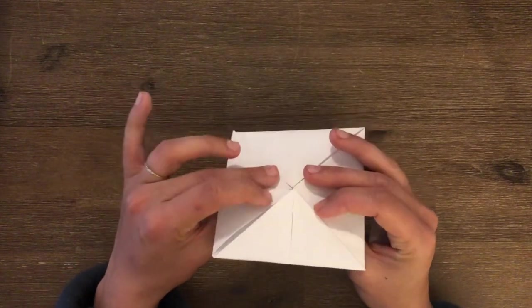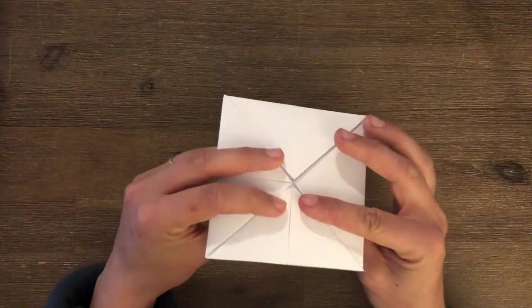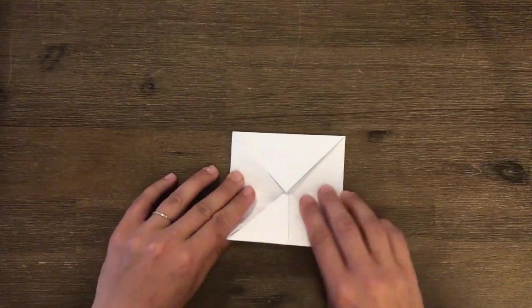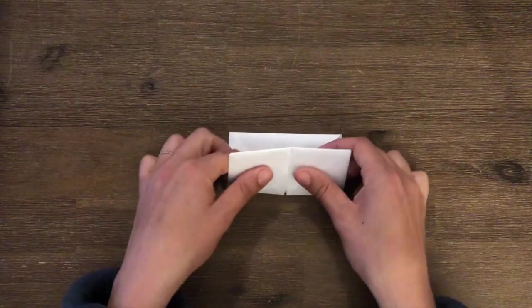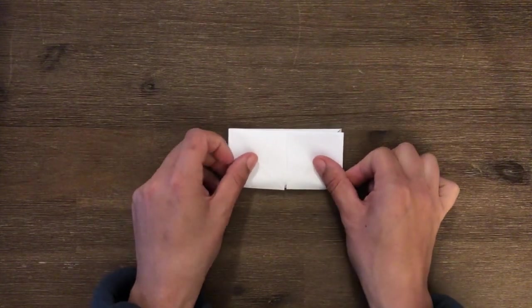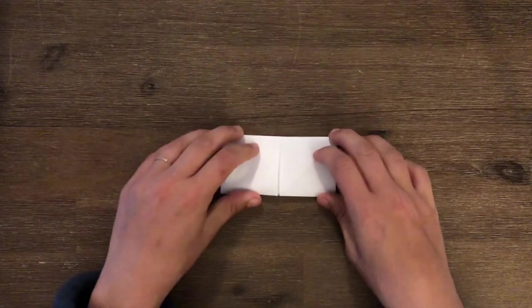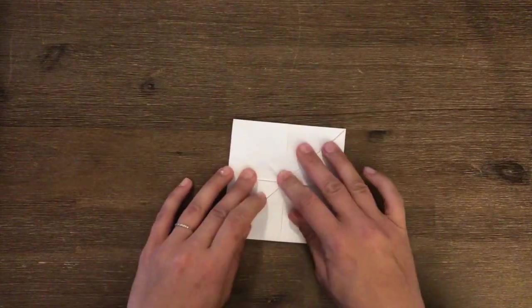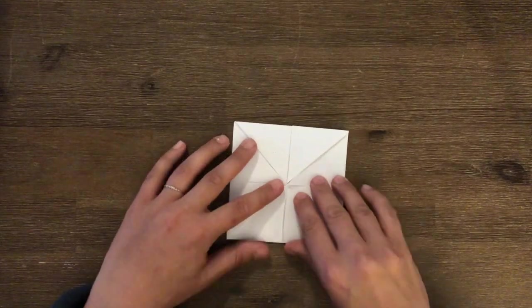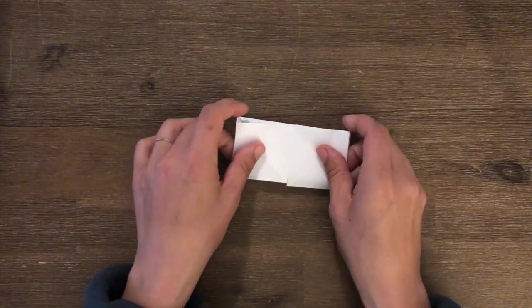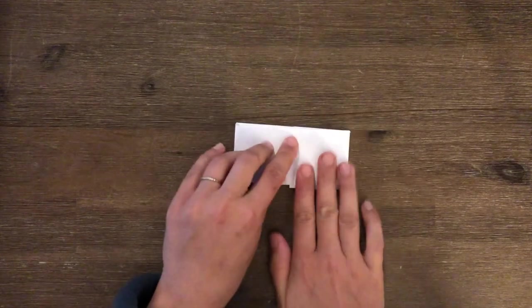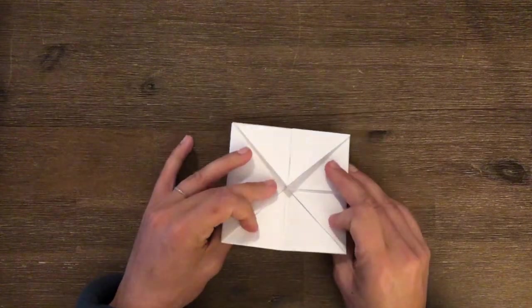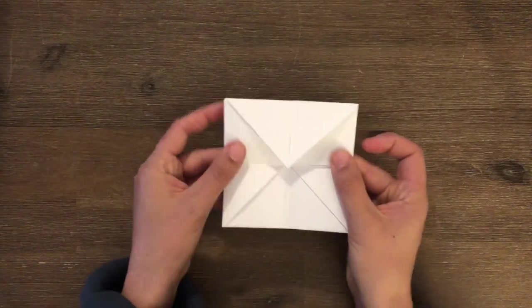So this is going to be the inside of our fortune teller. Now what we have to do is we've got to fold our square in half to make two rectangles. So I'm going to fold it in half like this so that I end up with a rectangle. And I'm going to open it back up. I'm going to turn it once, and I'm going to fold it again to make another rectangle. What we're doing now is we're just making the paper nice and soft on the inside so that we can actually open and close our fortune teller.